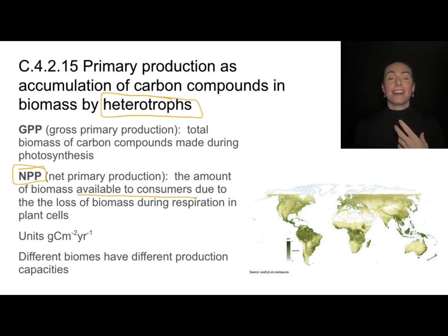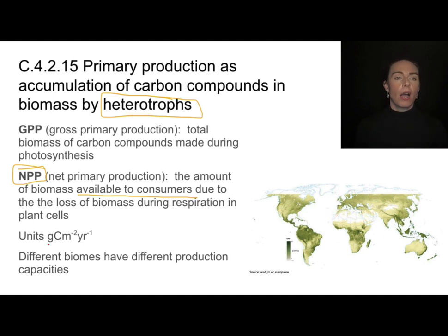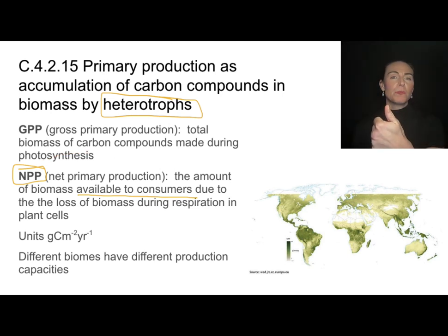We can look at NPP in different biomes of the world. There is a really high NPP in equatorial regions, and not so much in deserts or Arctic regions. The units for NPP are grams of carbon per meter squared per year. It's interesting to see how that changes with different climates. Heterotrophs are dependent on primary producers — not only what they're able to produce because of their environment, but also how much they're using for their own respiration.